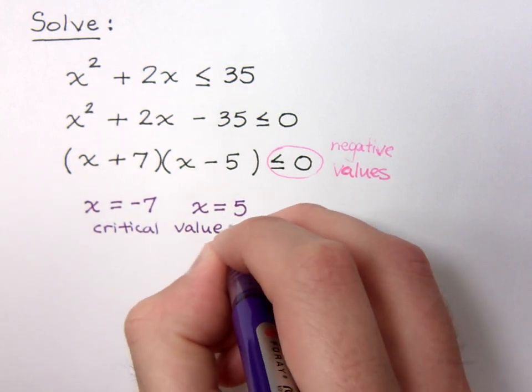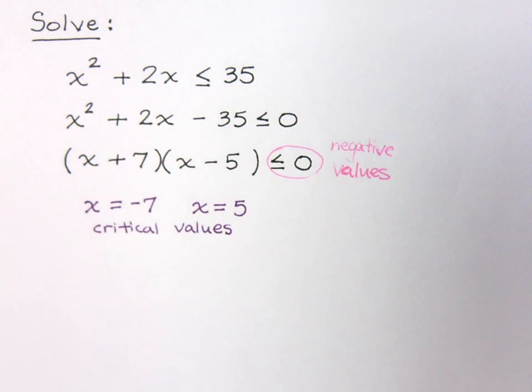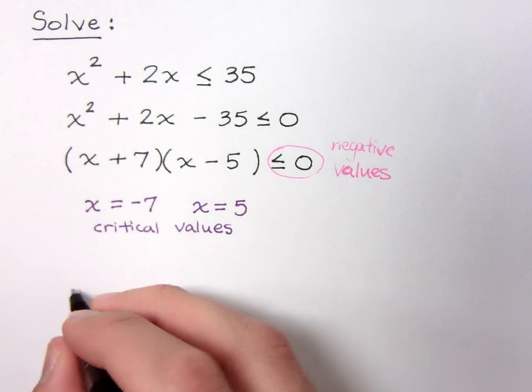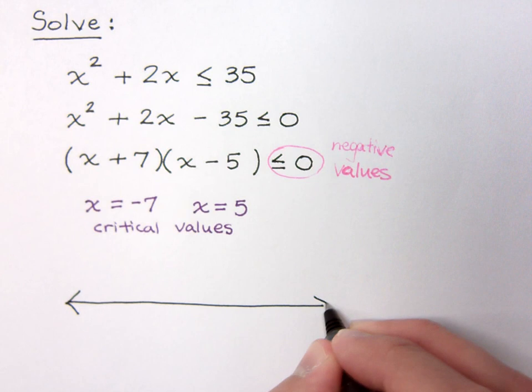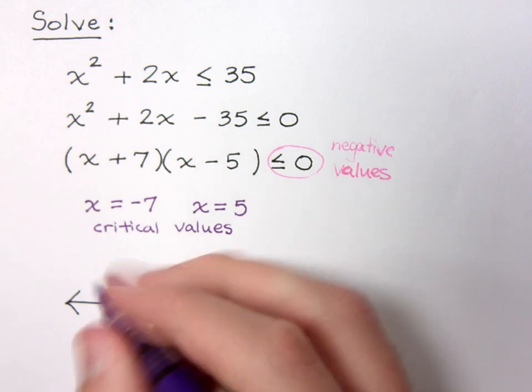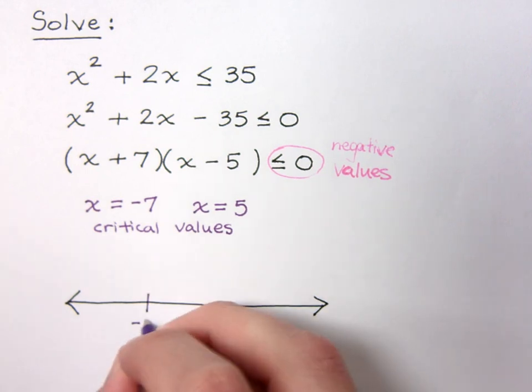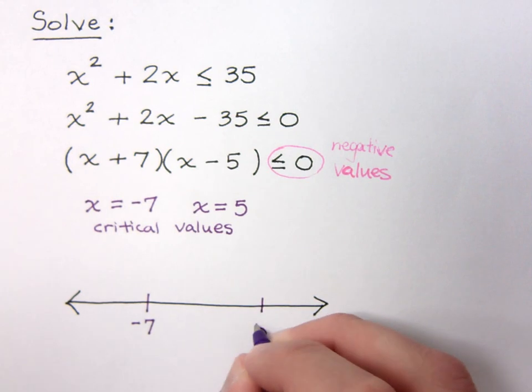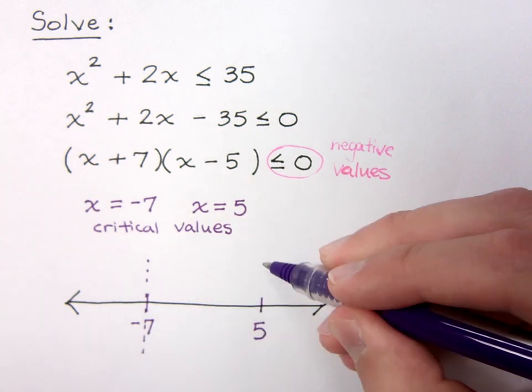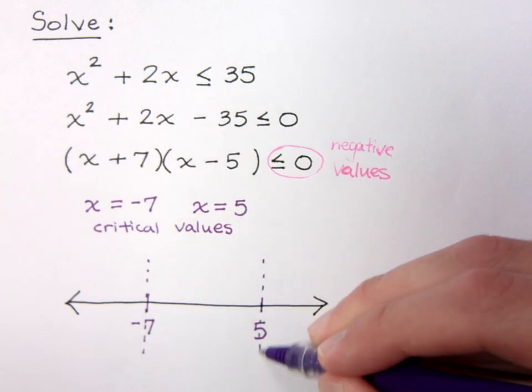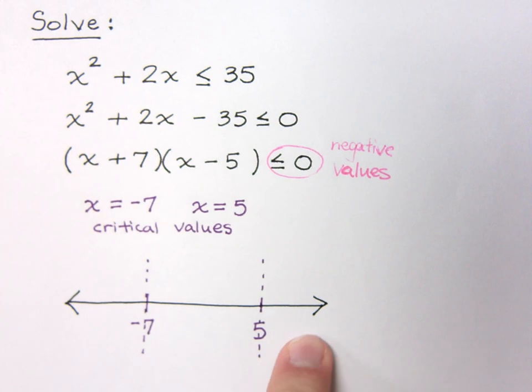You're going to run into these guys a lot when you take calculus. We're doing derivatives, finding concavity, and all this other great stuff. You're going to have to find critical values. So what these critical values do is that when I come down here and I look at my number line, I have negative 7 and positive 5, and it's as though it has divided this number line into 1, 2, 3 different areas.